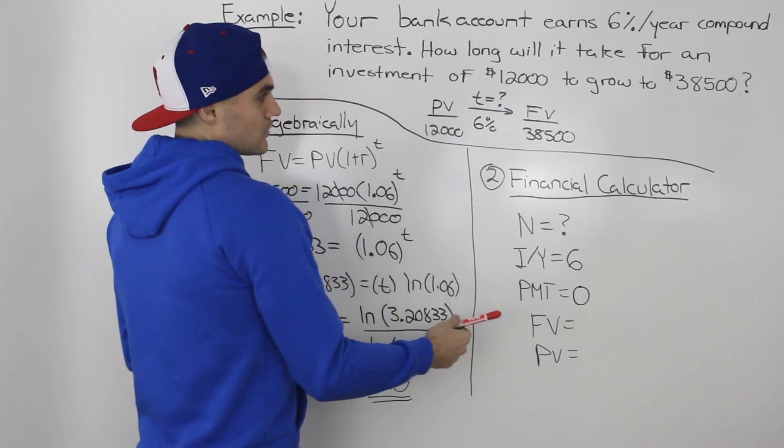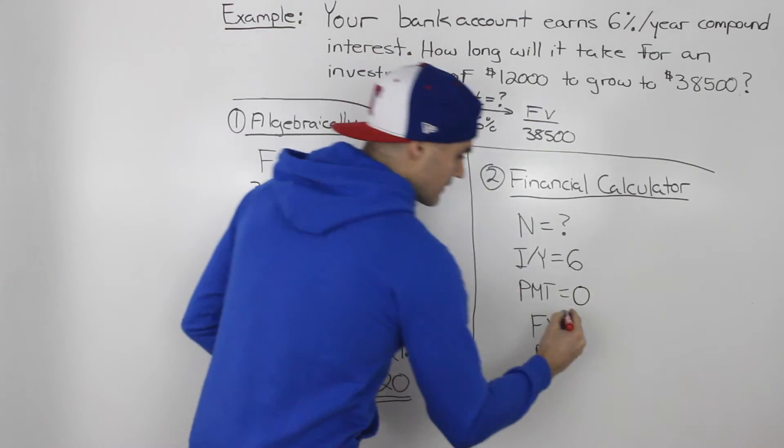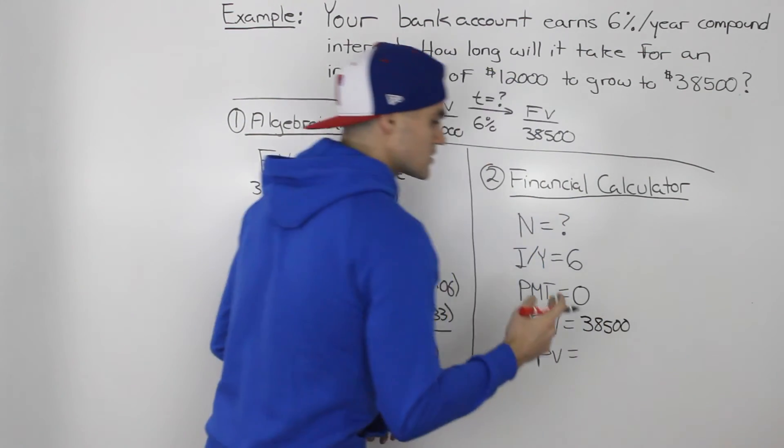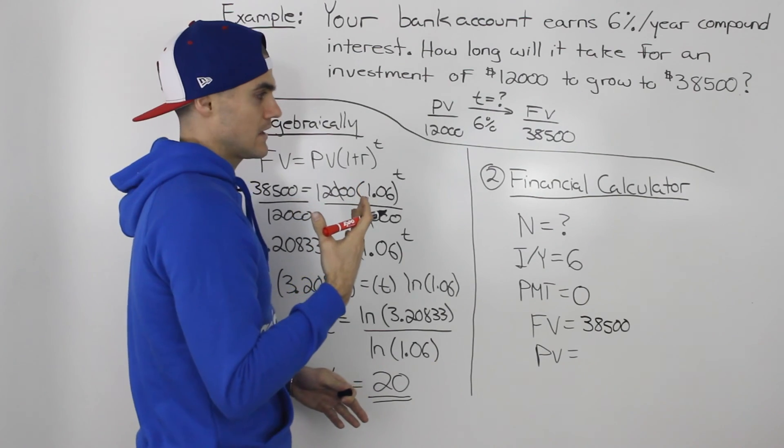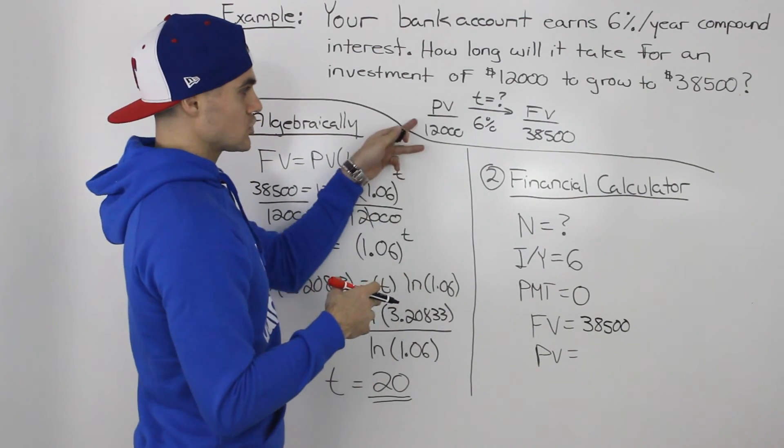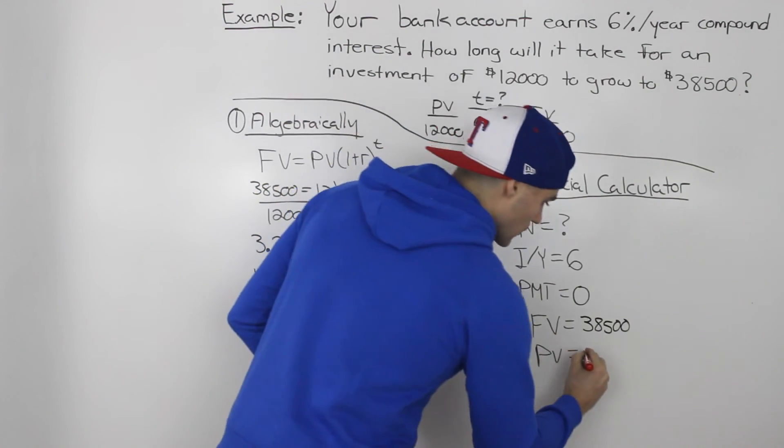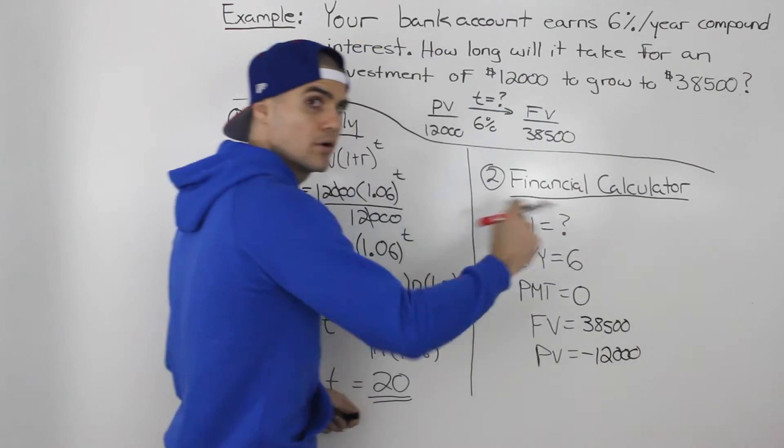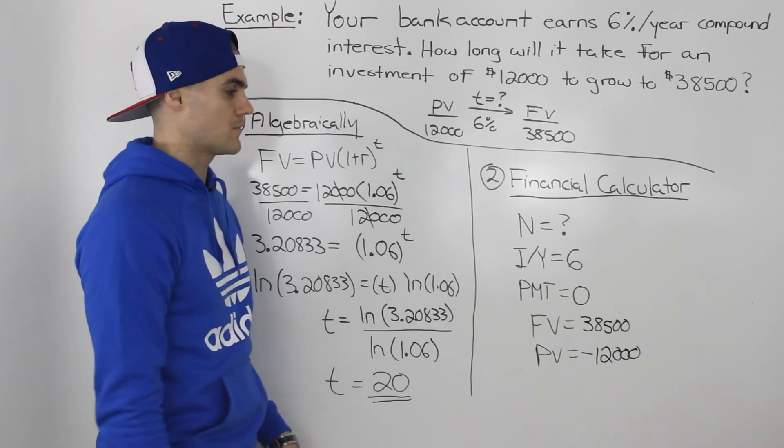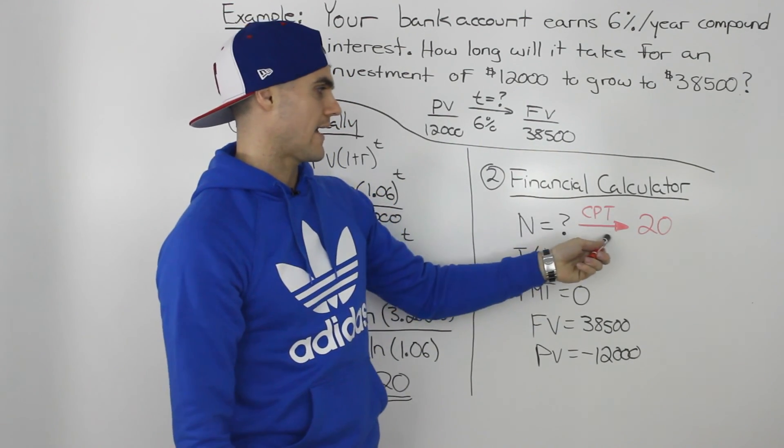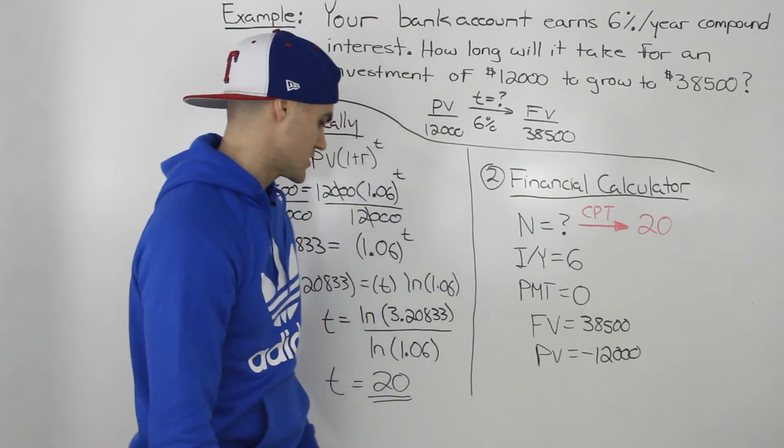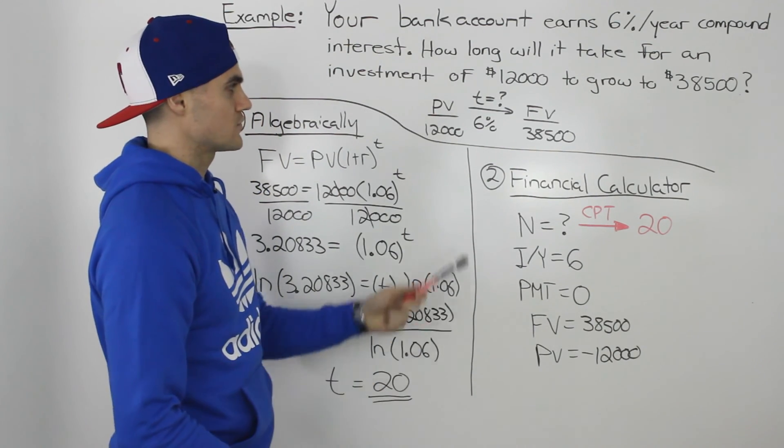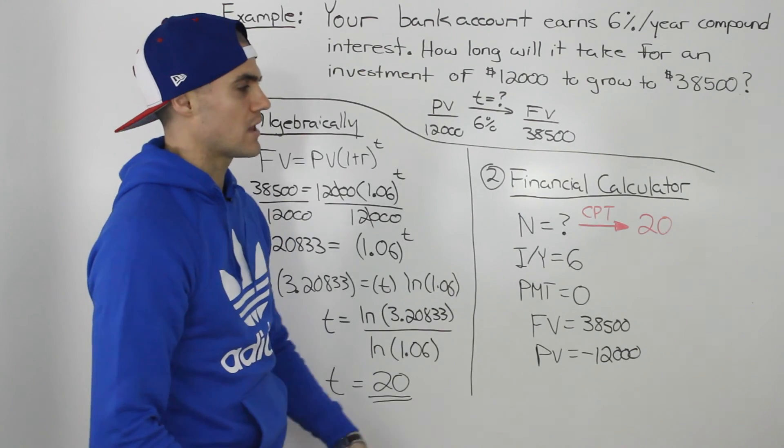The future value would be $38,500, and that would be positive because we're getting that back at the end. And initially, we are investing $12,000. So that is a negative cash flow to us. We are putting money in the bank account. And then computing it in your calculator, we would get n equaling 20, which is the same answer that we got here. So it takes 20 years for that investment to grow to $38,500.